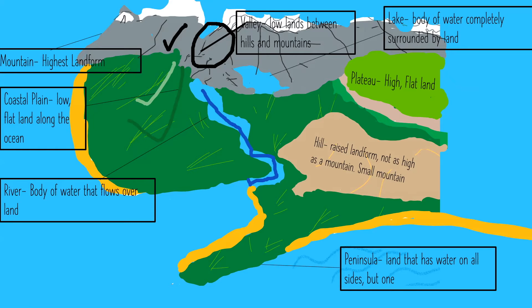A hill is kind of like a small mountain except the peak is nice, smooth, and curvy. Hills are really common — you'd probably have some around your community. You can see how it's curvy here in the drawing.